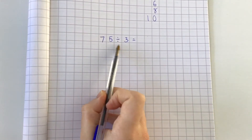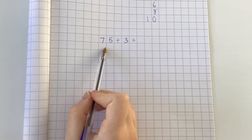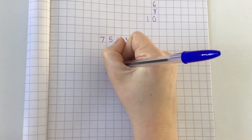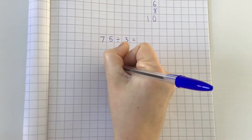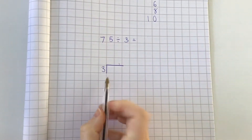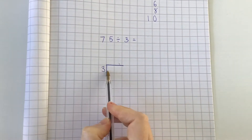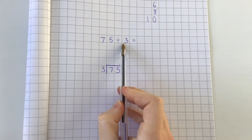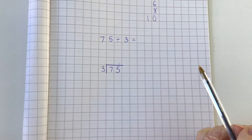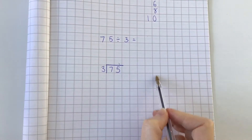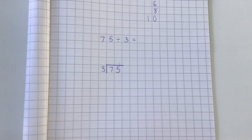Let's have a look at another division question. This time we're doing 75 divided by 3 — 75 is our two-digit number and we are dividing by 3, which is a one-digit number. Let's get it set out: one line comes down, one across — our sideways L shape. 3 needs to sit on the outside and 75 goes on the inside. Because I'm dividing by 3, I'm going to use my three times tables.